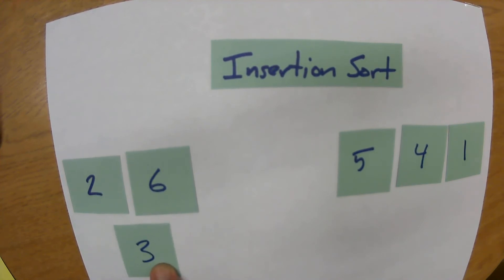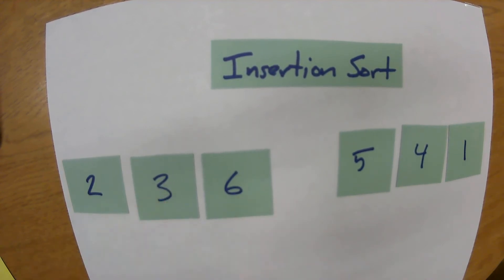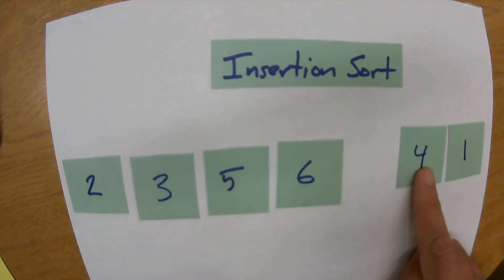So we know it must go in between the two and the six, and so we put it into the sixth position and the six slides over. And the five is lower than the six but it's not lower than the three, so that's where it slides in. And we take the four and it's lower than the six, it's lower than the five, but it's bigger than the four.